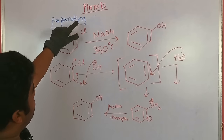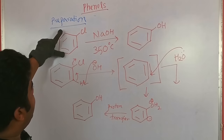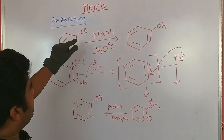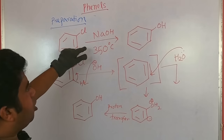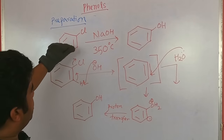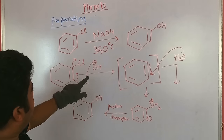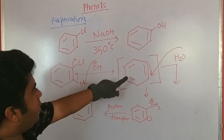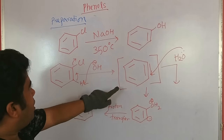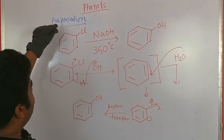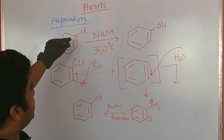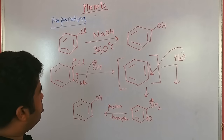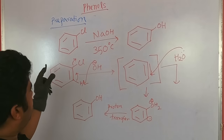If a chlorine substrate is present and we add electron-withdrawing substituents, the probability of nucleophilic aromatic substitution increases. The reaction proceeds via a benzyne intermediate, but if we add electron-withdrawing substituents like nitro groups, the probability of nucleophilic substitution reaction is greater.